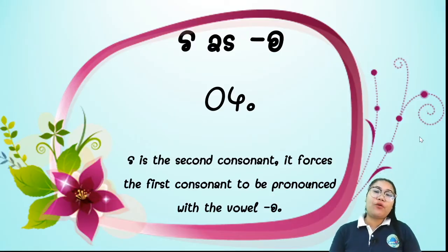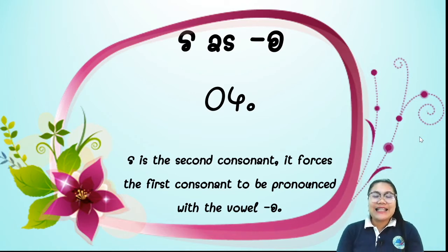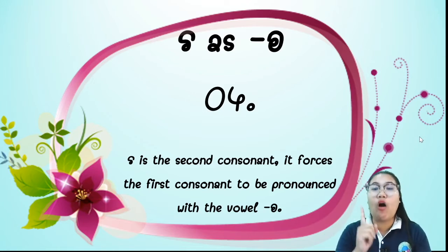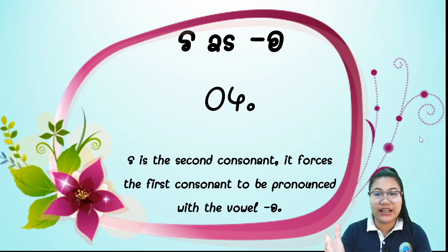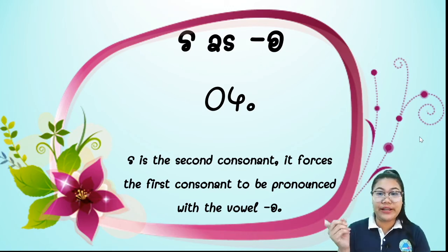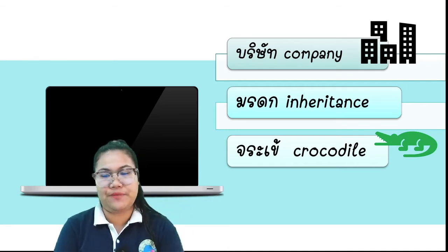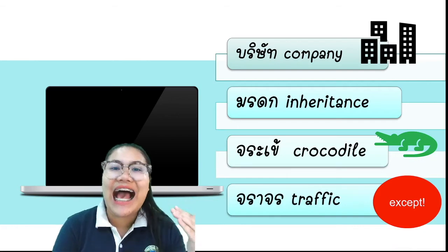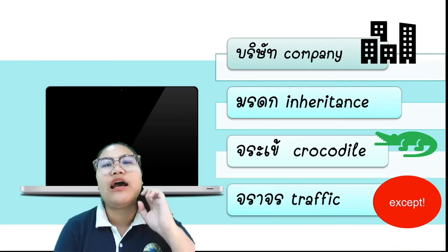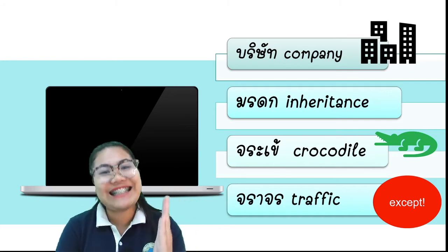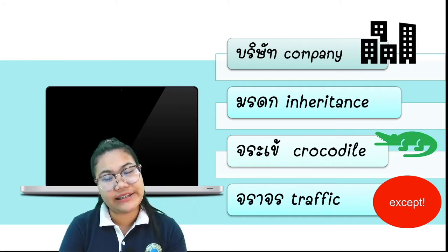And the last rule for รอเรือร์: รอเรือร์ as the vowel ออ. When รอเรือร์ is the second consonant, it forces the first consonant to be pronounced with the vowel อ. Let's see the vocabulary to make this clear. The word จักรยาน — if you see this word, it is an exception. This word we pronounce จักร — and we don't pronounce it as จอราจอน. This word is pronounced จักรยาน, which means 'traffic' or 'bicycle.'